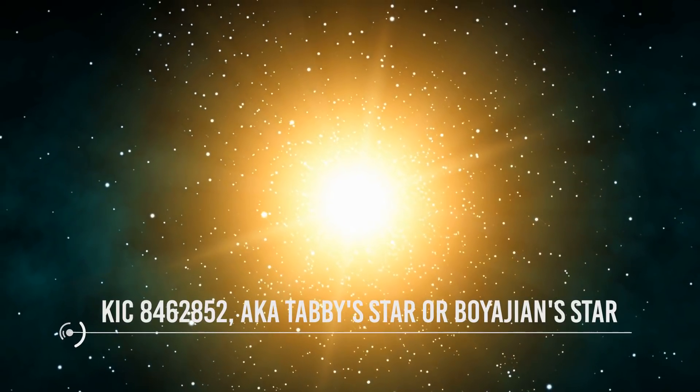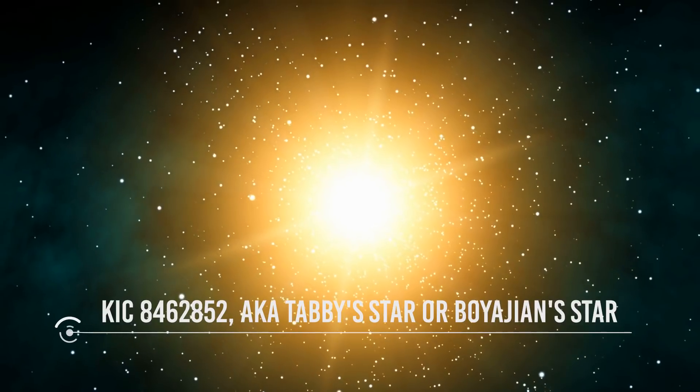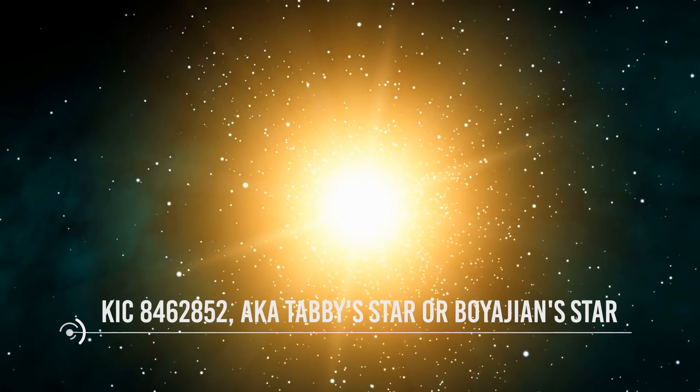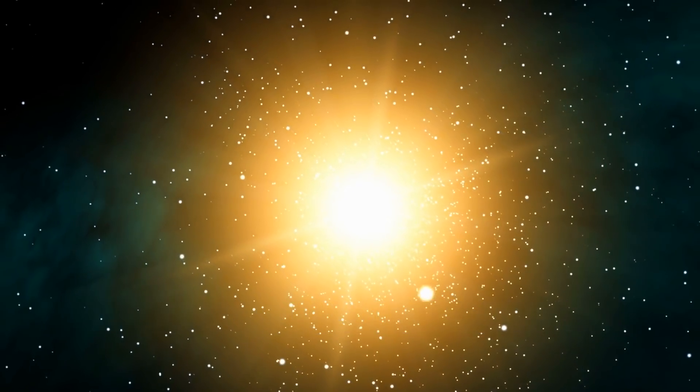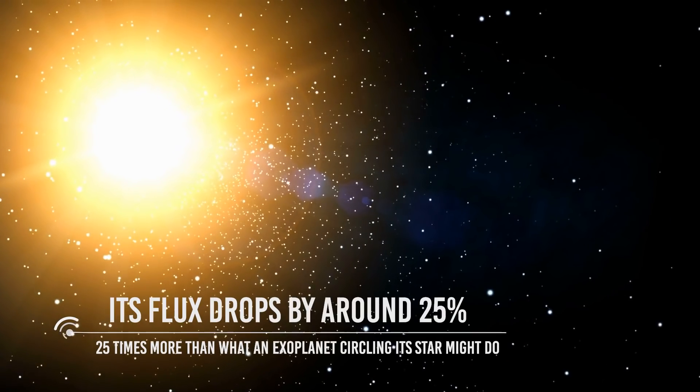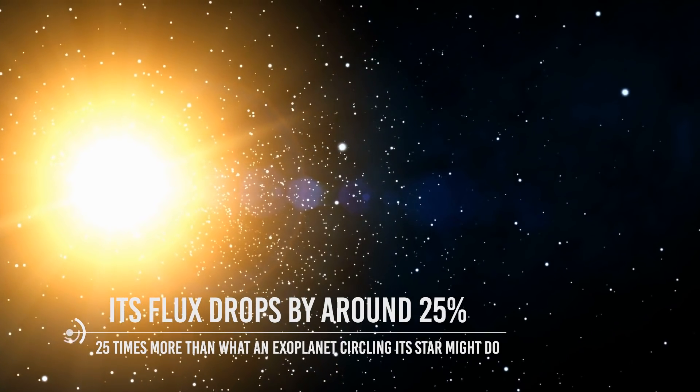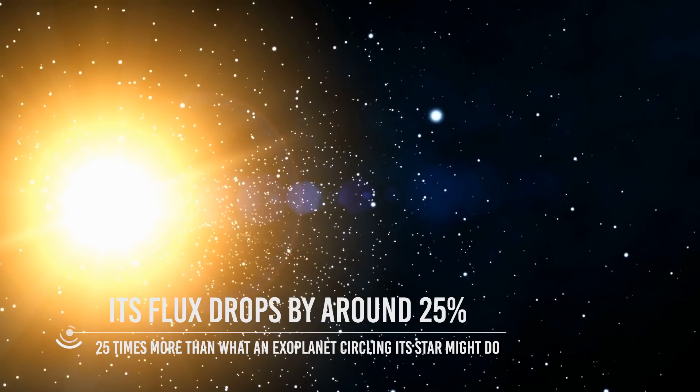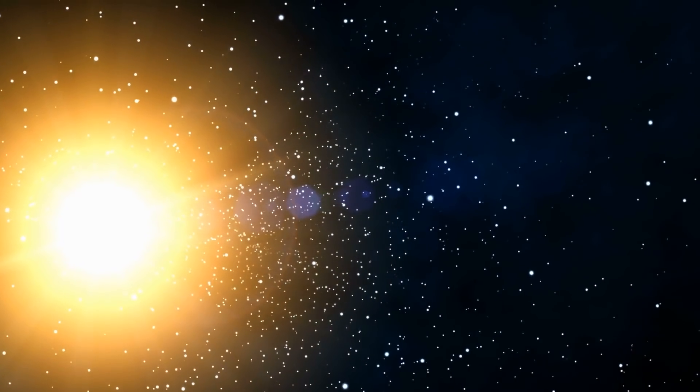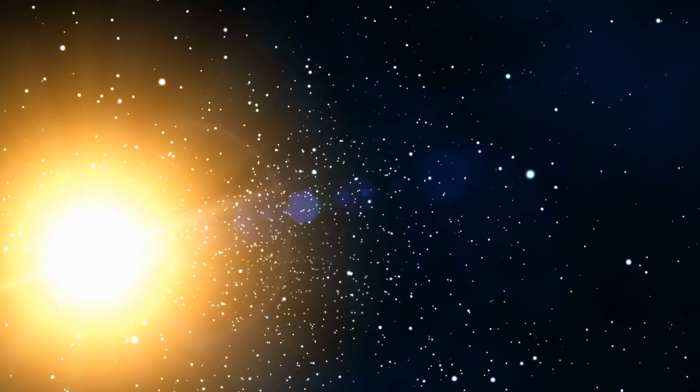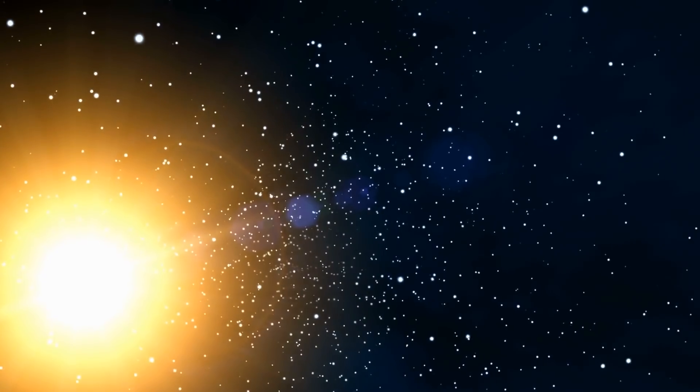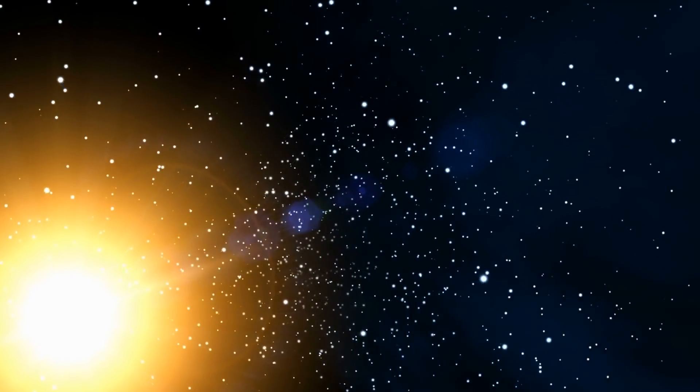KIC 8462852, commonly known as Tabby's star or Voyagian star, possesses some of the universe's most unusual properties. Its flux drops by around 25%, which is 25 times more than what an exoplanet circling its star might do. It also fades gradually over decades, with unique brightening occurrences and no infrared emission, which all the other stars with large flux dips possess.